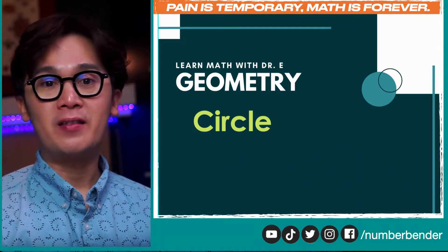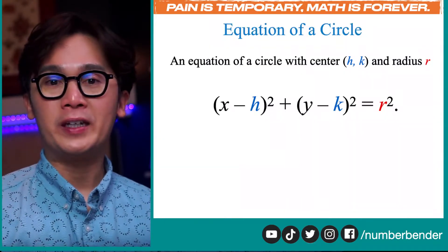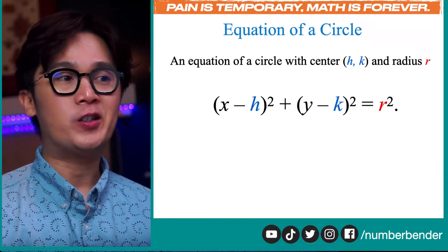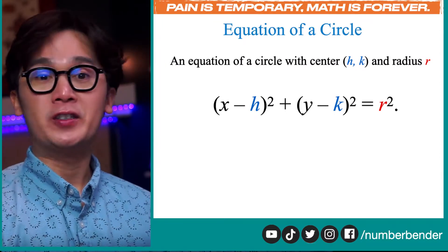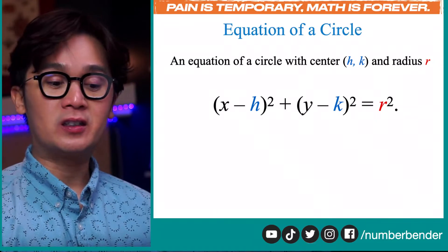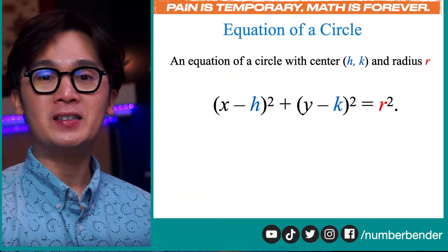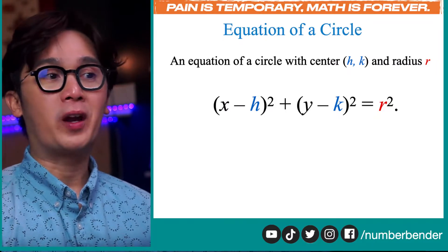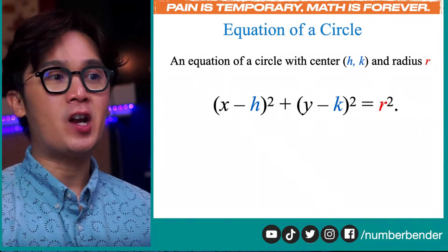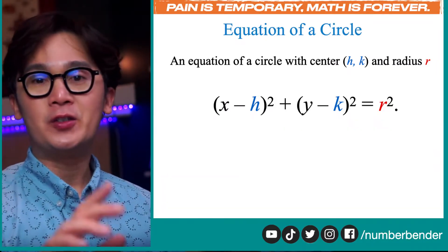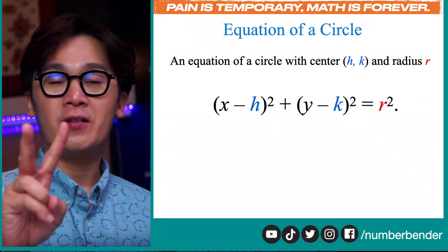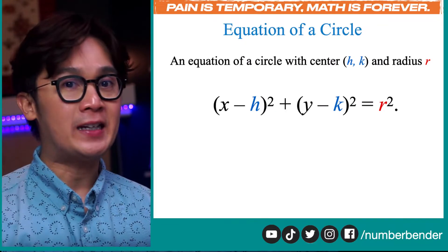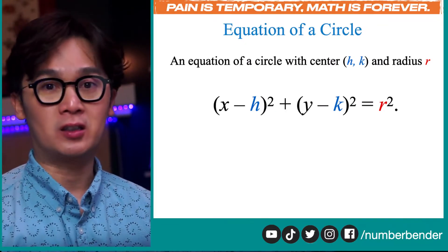For this equation, we need the standard equation of the circle, also known as the center radius form. We have x minus h squared plus y minus k squared is equal to r squared, where hk is our center and r is our radius. Notice that we have two elements of the circle that we need to write the center radius form.